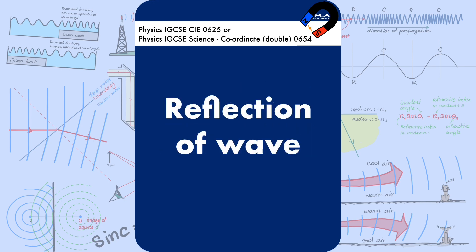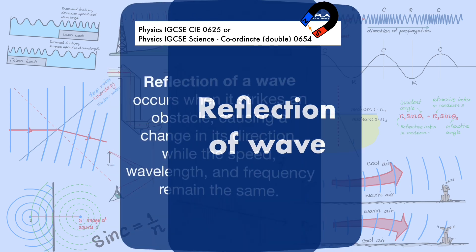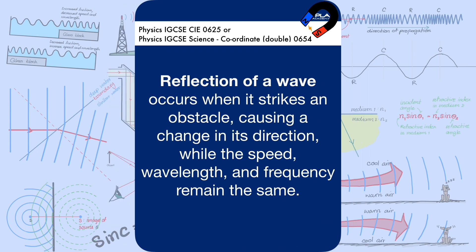Reflection of a wave occurs when it strikes an obstacle, causing a change in its direction, while the speed, wavelength, and frequency remain the same.